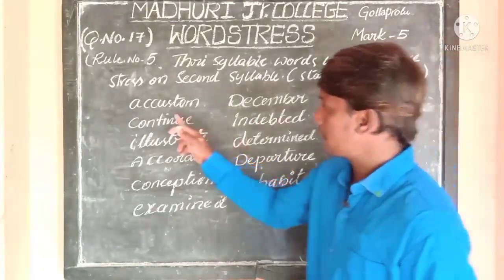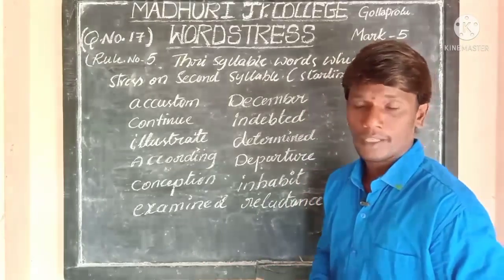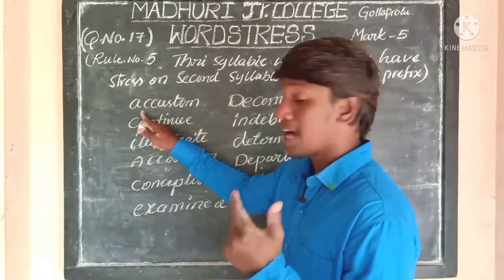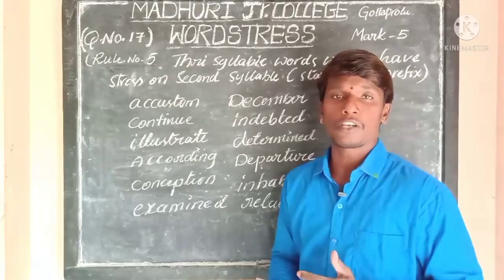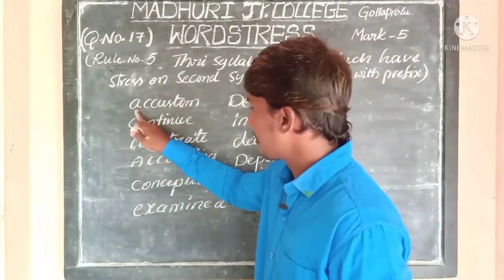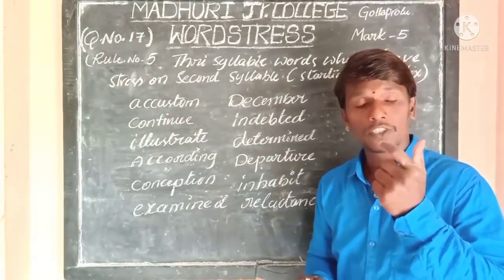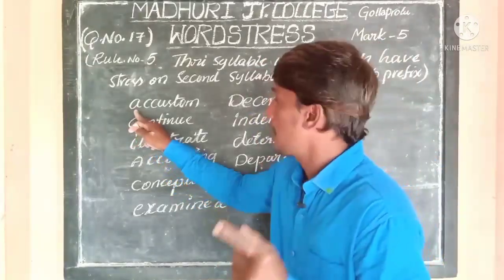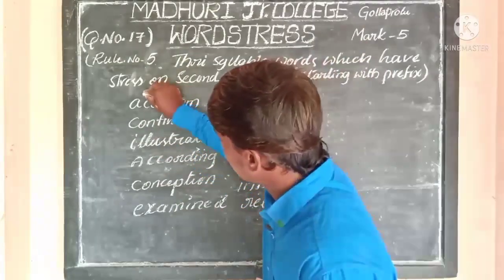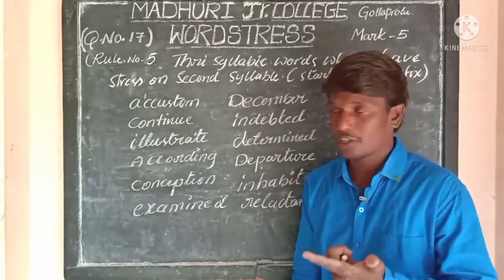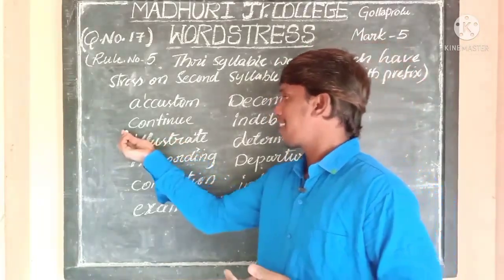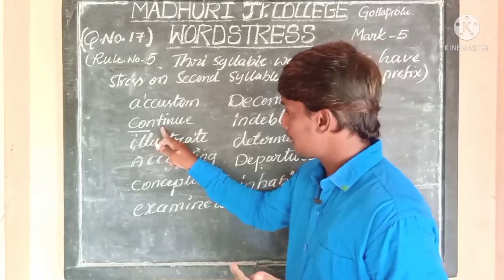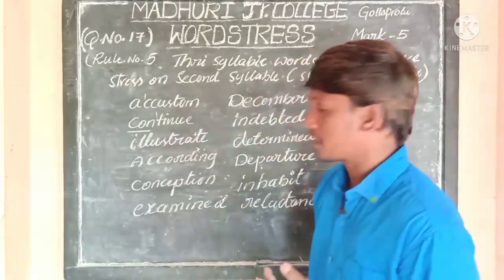You should understand the difference: if a trisyllabic word starts without a prefix, stress takes place on the first syllable. Whereas if the same trisyllabic word has a prefix in front of the root word, stress takes place on the second syllable. For example, 'accustom' — A is a prefix, so the second syllable starts from KA: a-CUS-tom. Next is 'continue' — CON is a prefix, second syllable starts from T: con-TIN-ue.